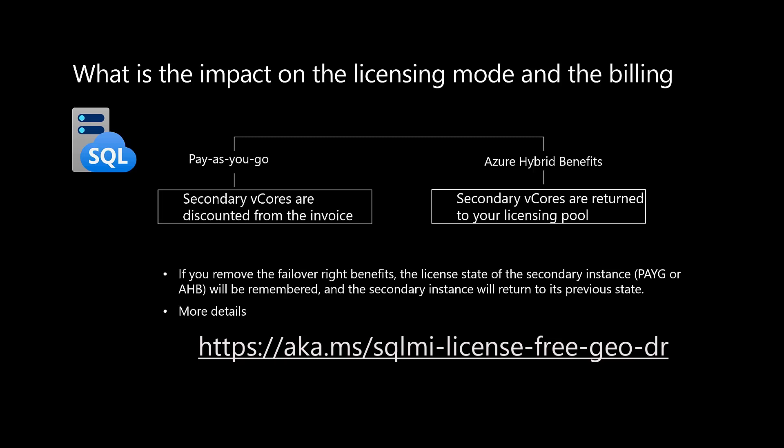What happens with licensing mode and billing when you activate failover write benefit? If the secondary instance was in pay as you go mode, then the secondary vCores are discounted from your invoice. If the secondary instance was in Azure Hybrid Benefit, then secondary vCores will be returned to your licensing pool so you can use them for other purposes. Note that if you remove the failover write benefit, the license state of the secondary instance will be remembered — if it was pay as you go it returns to pay as you go, and if it was Azure Hybrid Benefit it returns to Azure Hybrid Benefit. You will find more details on the provided link. Thank you.